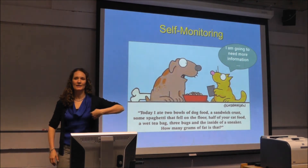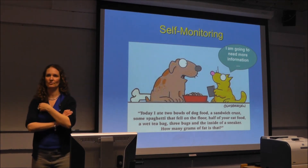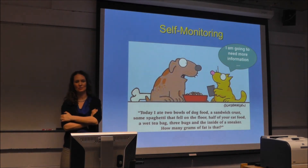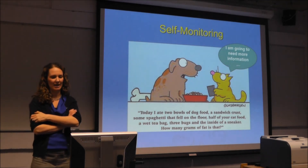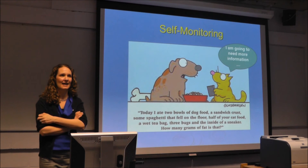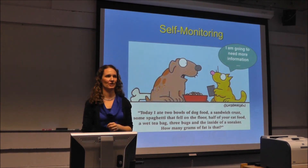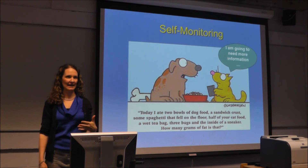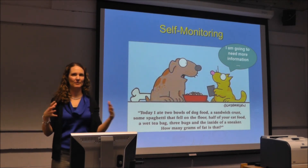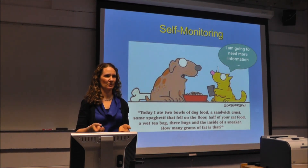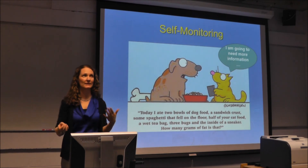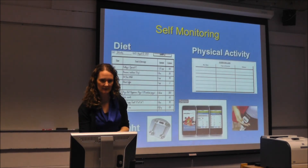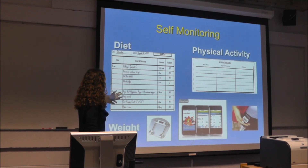Self-monitoring means asking people to write down very specifically everything they consume. There's even a humorous example here of a dog listing what he ate. We really ask as specifically as possible — what did you consume, how many calories does it add up to? This helps address portion distortion, so people realize that one piece of pizza wasn't 200 calories but actually 600 calories.